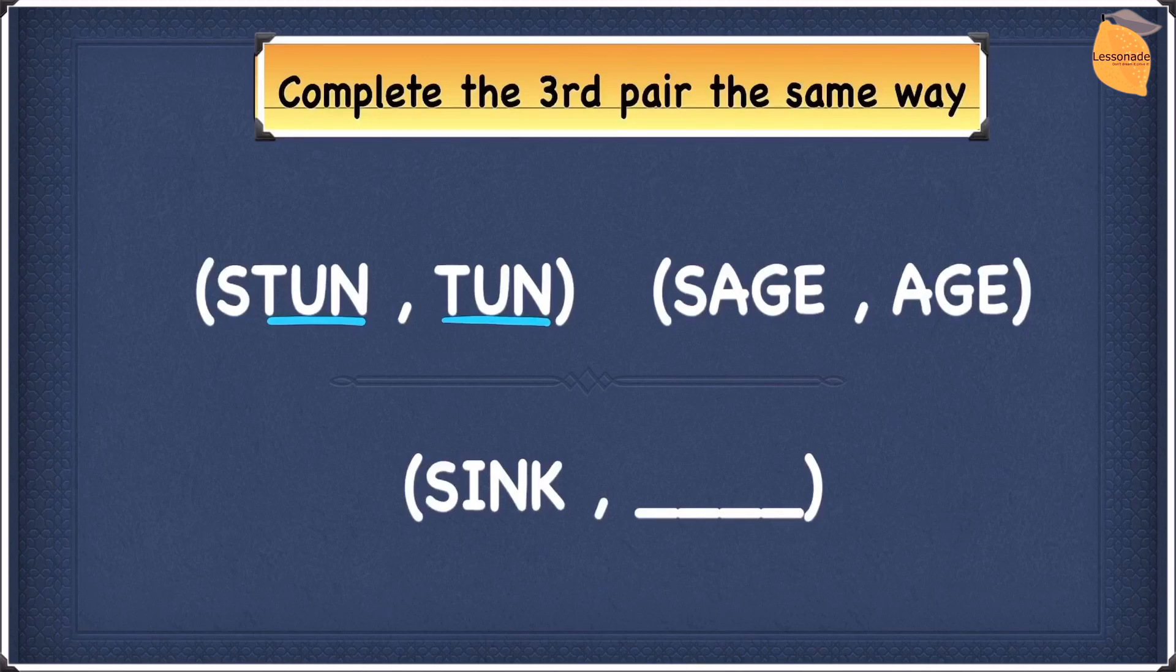So now, let's try making a rule to get from STUN to TUN. The only rule we can think right now is keep the last three letters and remove the first letter to give you the second word. Because if you keep the last three, you're going to get TUN. If you remove the S, you're still going to be left with TUN.